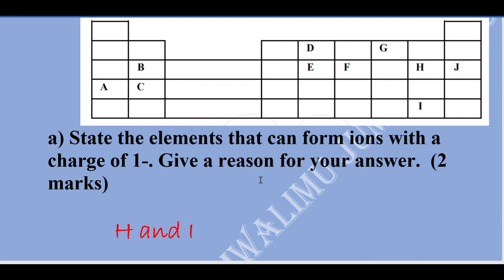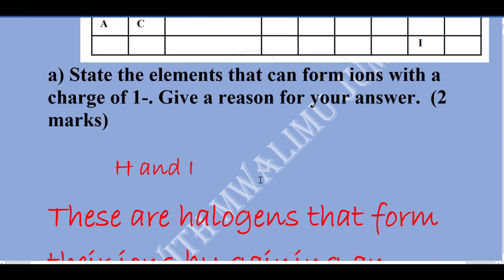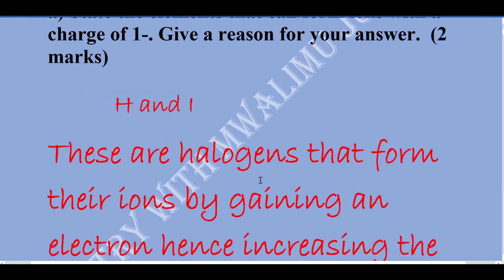It is a non-metal that gains electrons — non-metals are the ones that gain electrons. Being that one electron has been gained, group seven elements are the ones that gain one electron to form a stable ion. From our periodic table, the letters that represent group seven elements, or the halogens, are H and I. These halogens form their ions by gaining an electron, hence increasing the negative charge.